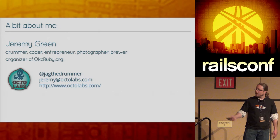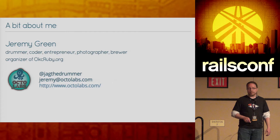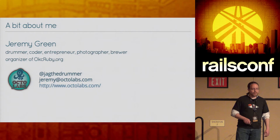A little bit of information about me: my name's Jeremy Green. I'm one of the organizers of the OKC Ruby group, which helped me a lot in getting this talk ready — they let me preview it and gave me a lot of feedback. On both Twitter and GitHub I am Jag the Drummer. You can email me at Octolabs or check out my website.